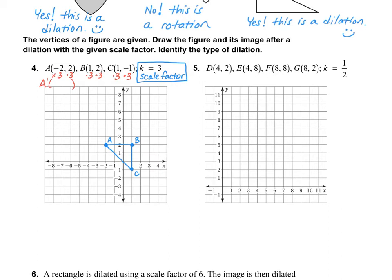So point A prime is going to be negative 2 times 3, which is negative 6, and 2 times 3, which is positive 6. So on my graph, I start at 0, 0. I go negative 6 and positive 6. So this will be my new A prime point.